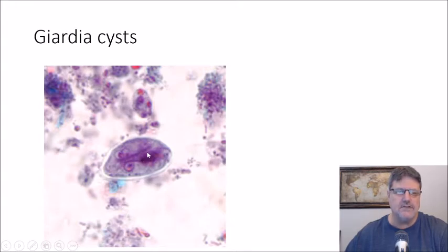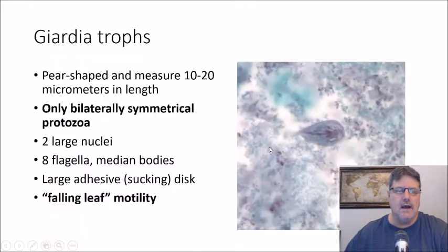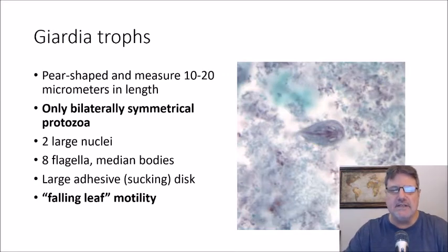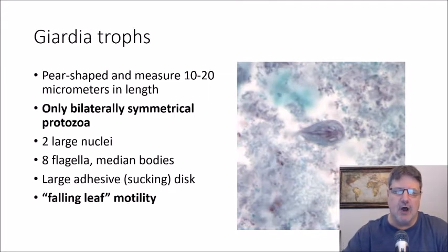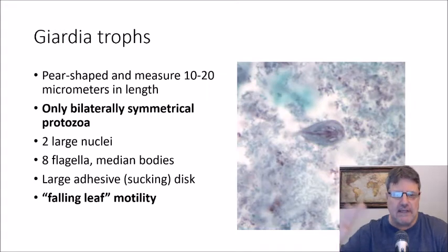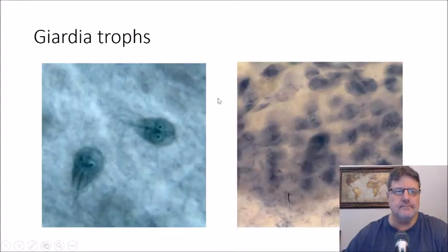You can see the axostyle right here. Giardia trophs are very characteristic — they are pear-shaped and measure up to 20 micrometers in length. This is the only bilaterally symmetrical protozoan; if you were to cut this trophozoite lengthwise in half, it would be identical on both sides. It has two large nuclei, eight flagella, median bodies, and a large sucking disc on the bottom.